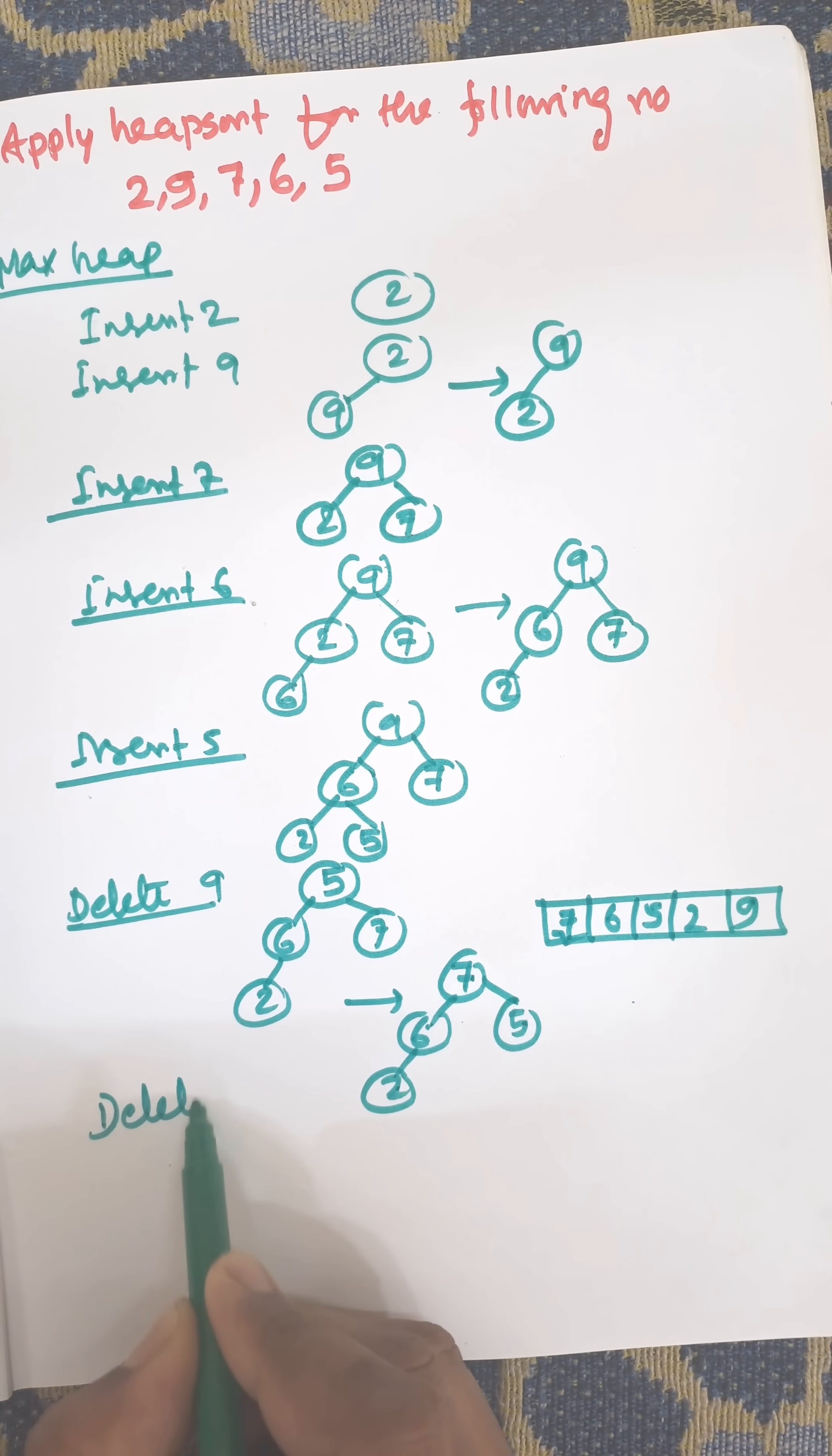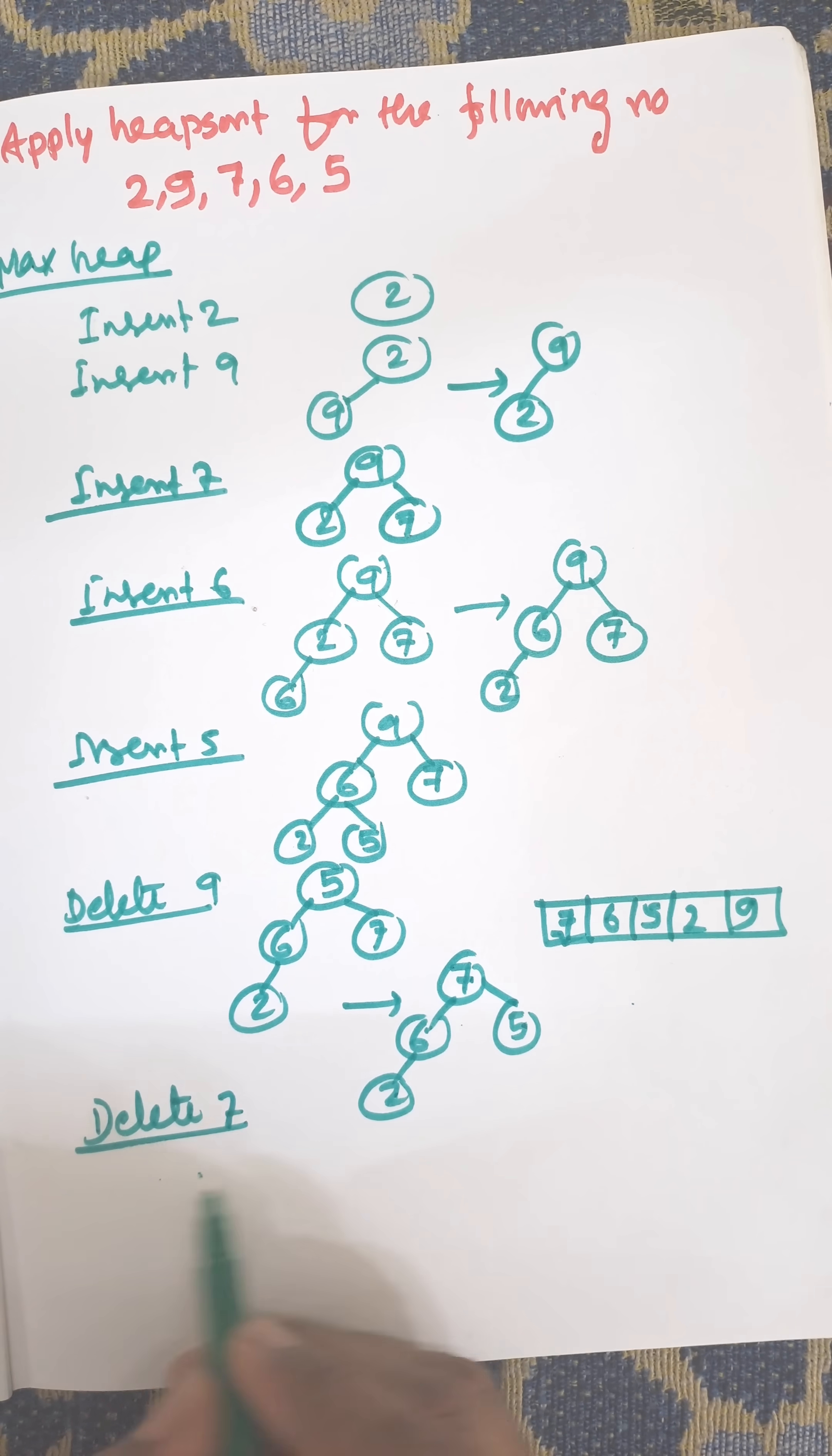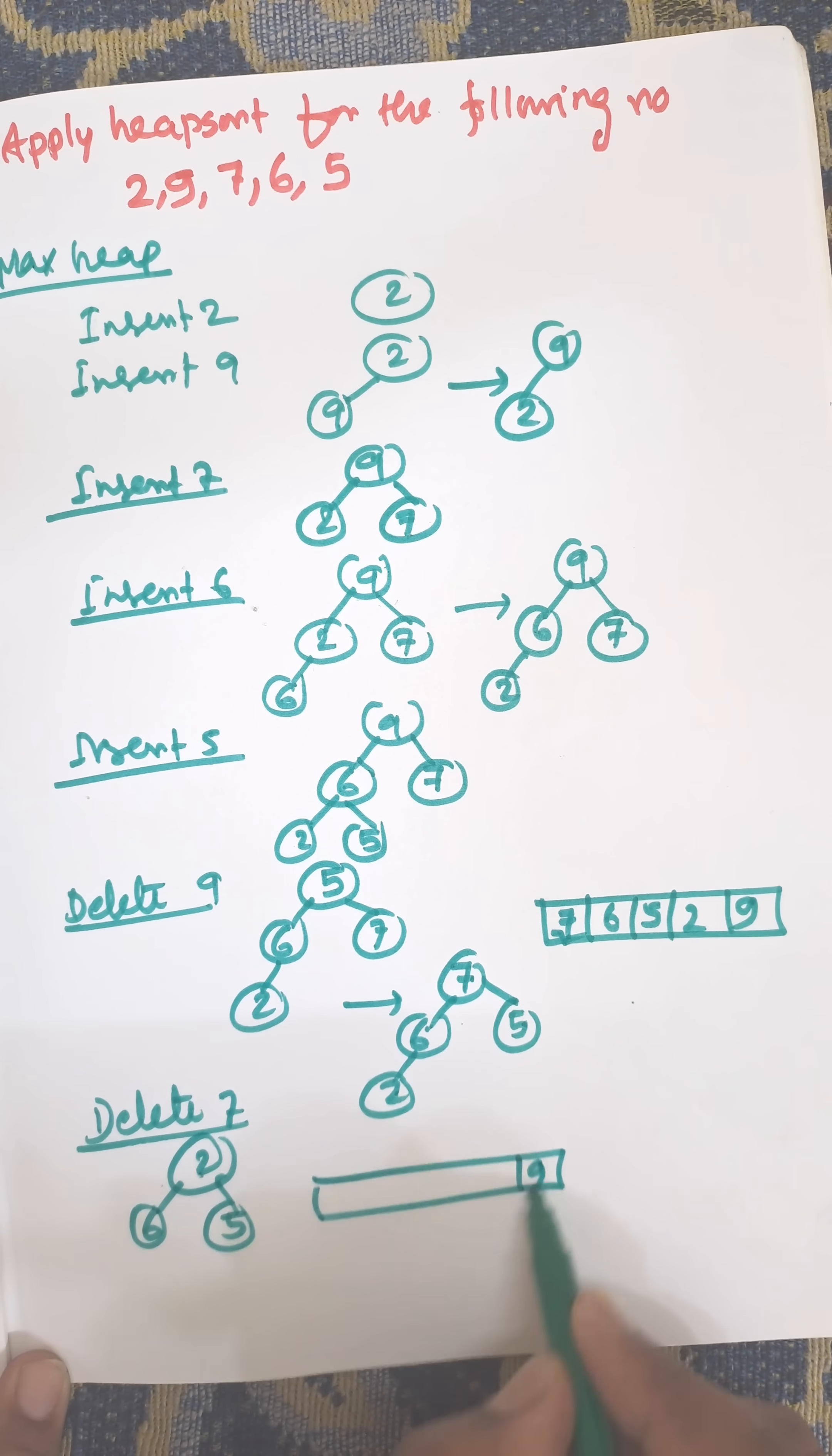Now delete 7. When we delete 7, then 2 will be the temporary node. 2, 6, 5. And the array will be 9, 7.